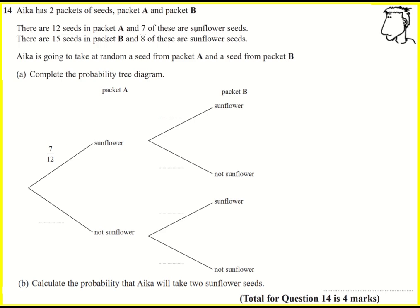The number of ways that we could pick a sunflower seed divided by the total number of seeds that we could take. There are then five seeds that are not sunflower seeds and it'll be 5 over 12 here.